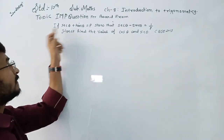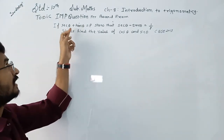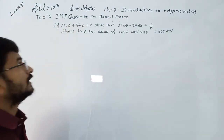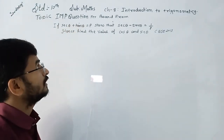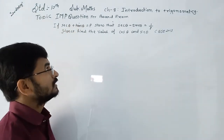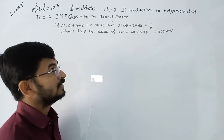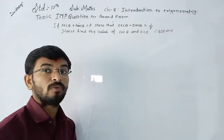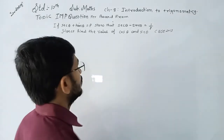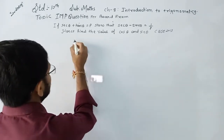The question is: if sec θ + tan θ is equal to p, then show that sec θ - tan θ is equal to 1 upon p.